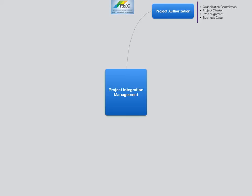A project is authorized by signing the project charter by the project sponsor, client, or customer. The project charter reflects the organization's commitment to spend the money on the project. It describes the business need and cost-benefit analysis in the business case, and documents who is the project manager, his role, and his authority.